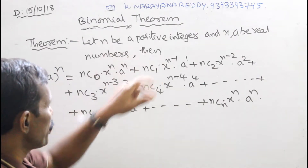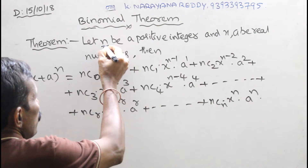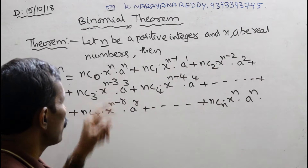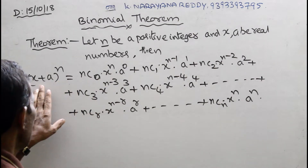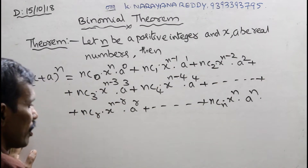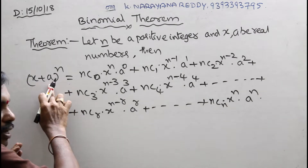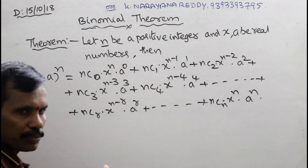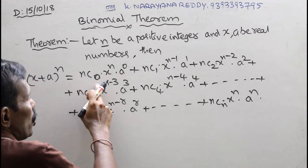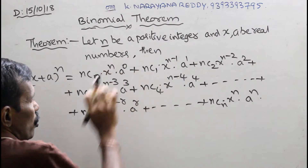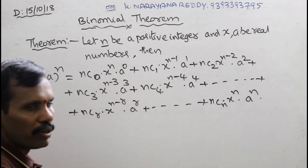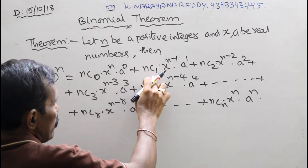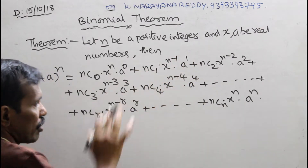Let n be a positive integer, and x and a be real numbers. Then the expansion of x plus a whole to the power of n begins with the term nc0 times x to the power of n times a to the power of 0.